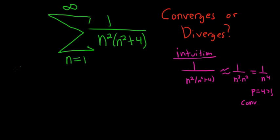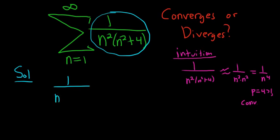So to use the comparison test to show convergence, you start by writing this down. So 1 over n squared, parentheses, n squared plus 4. And you want to show that this is less than the a sub n of a series that converges. You can think of this as your a sub n here. So this is less than or equal to 1 over n to the fourth.